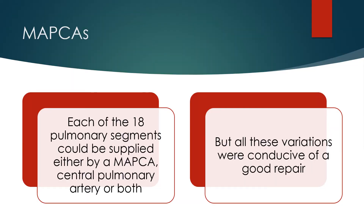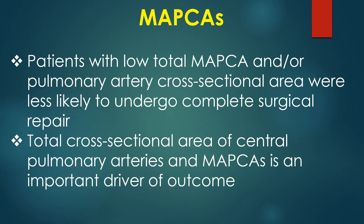Each of the 18 pulmonary segments could be supplied either by a MAPCA, central pulmonary artery, or both. All these variations were conducive of a good repair. However, patients with low total MAPCA and/or pulmonary artery cross-sectional area were less likely to undergo complete surgical repair. Total cross-sectional area of the central pulmonary arteries and MAPCAS is an important driver of outcome.